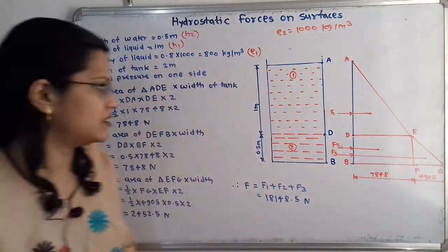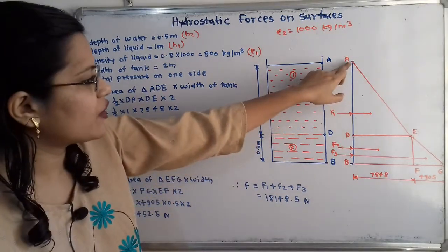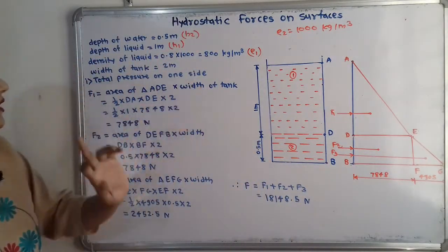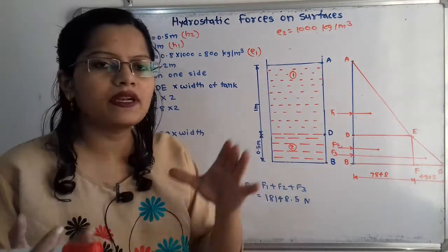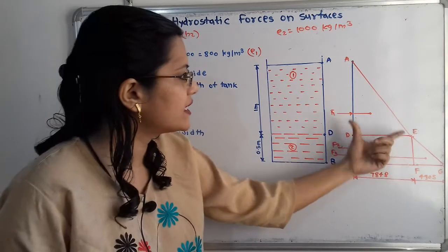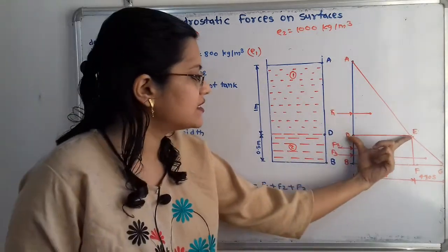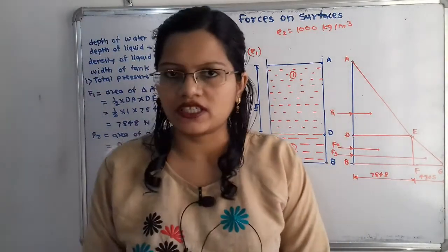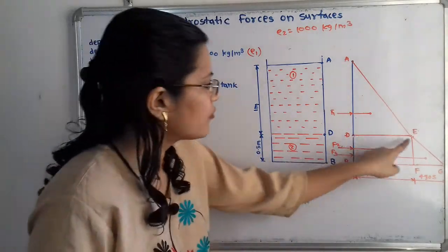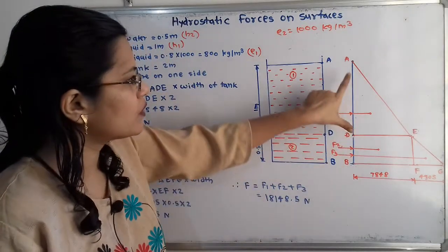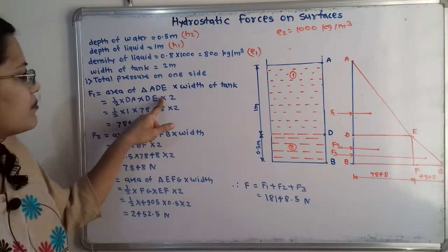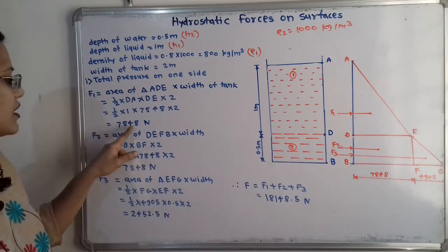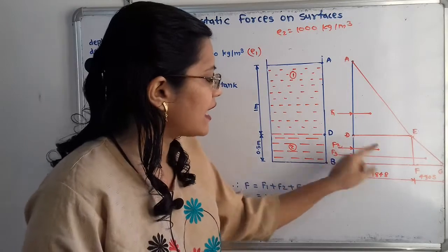To calculate F1, we use: F1 = area of triangle ADE × width. Area of triangle ADE = ½ × DE × AD = ½ × 7848 × 1. Multiplying by the tank width of 2 meters: F1 = ½ × 7848 × 1 × 2 = 7848 N.